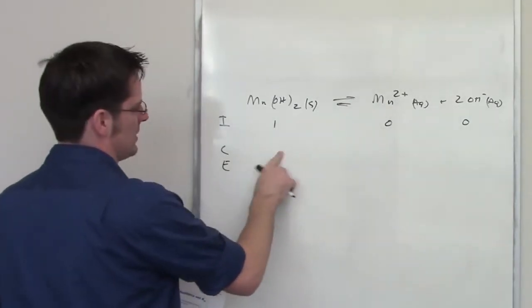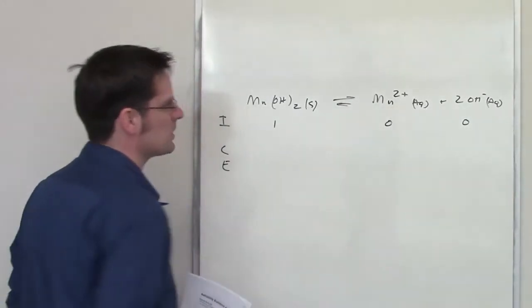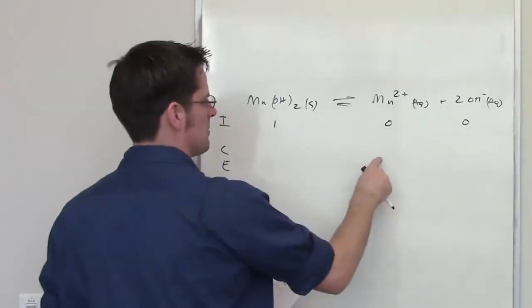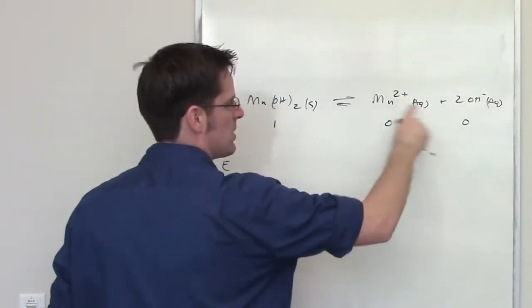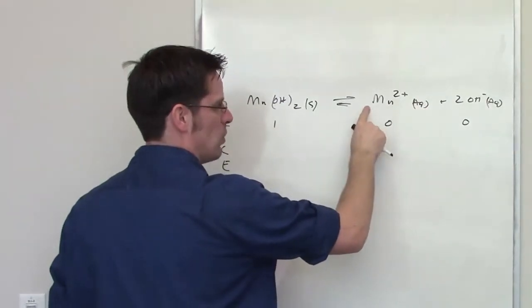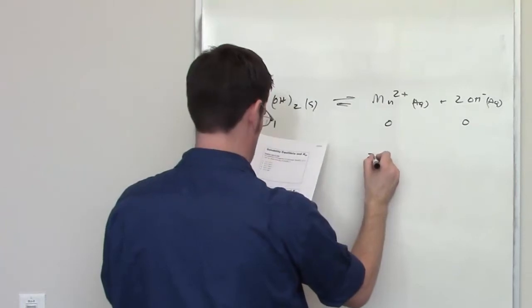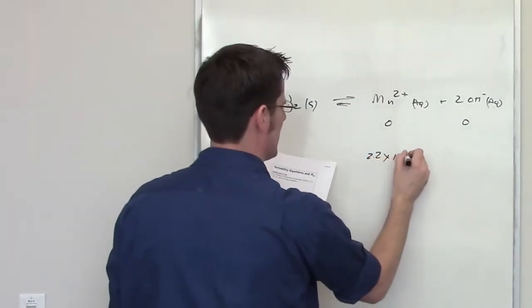So, by what amount is there going to be a change here, here, and here? Well, it gives me the molar solubility, and that number ends up going right into here. So what you do is you find one of the things on the right side of the equation that has a one in front of it as a coefficient, and that's where the molar solubility goes. So I've got 2.2 times 10 to the negative fifth molar.